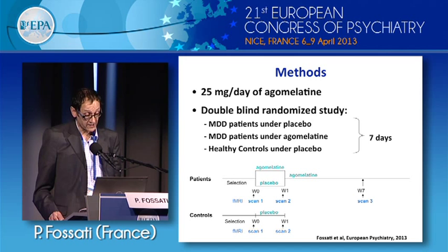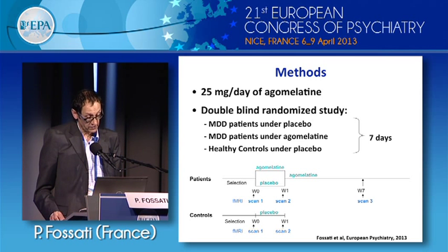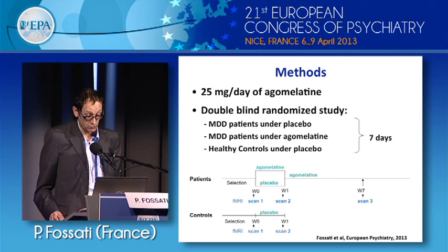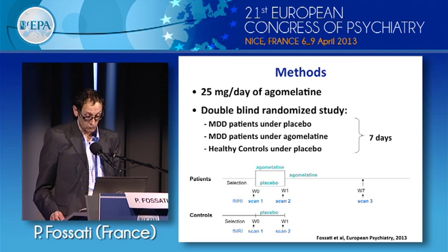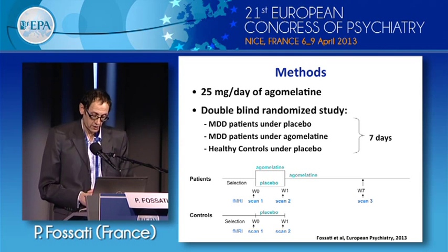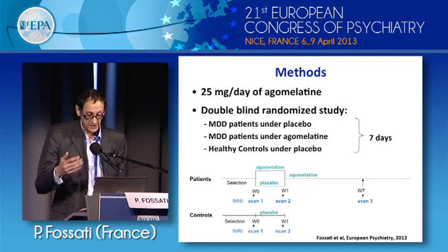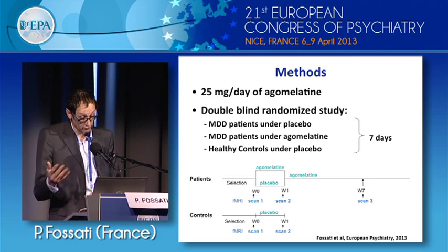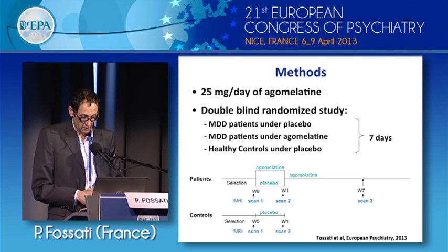We assessed brain activity of depressed patients and controls using an fMRI task at three time points for patients and two for controls. The first scan was before receiving treatment — either agomelatine or placebo — and the second scan after one week of placebo or agomelatine. A third scan was conducted after seven weeks of treatment, but I will not discuss those results today.